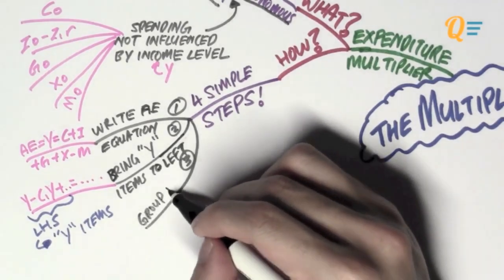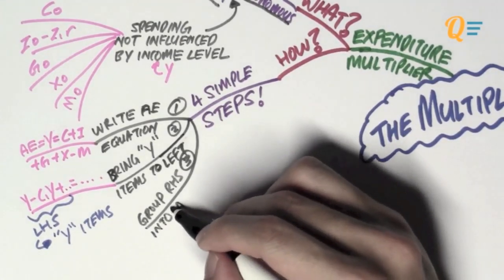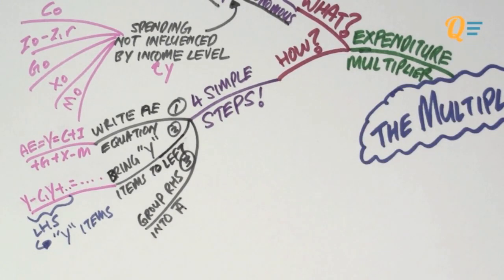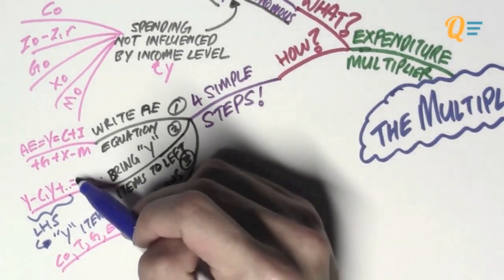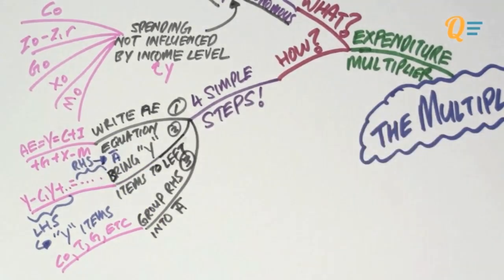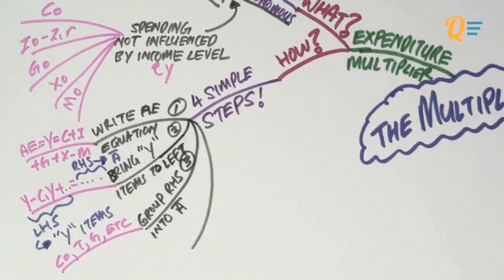Now, the third step is to group all the right-hand side figures, the remaining right-hand side figures, into A bar. So, A bar is your autonomous expenditure. It is things like C naught, taxes, as well as your government spending. So, the right-hand side will be known as A bar.